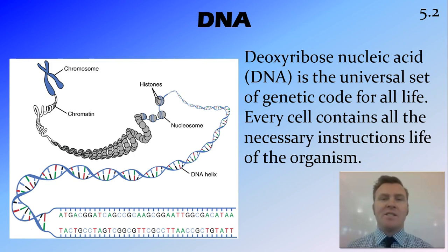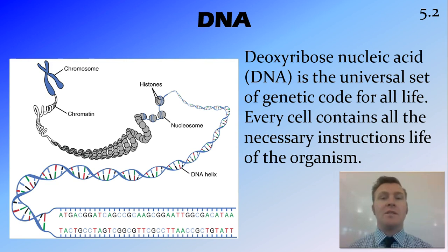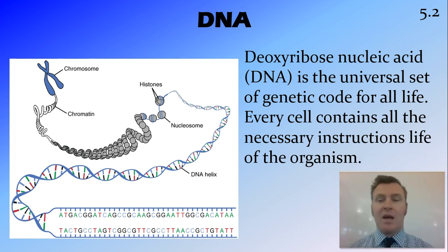Every cell — in multicellular organisms especially — contains all the genetic code for the organism. This means that every single cell in the body, whether it's a skin cell, a bone cell, a muscle cell, or a blood cell, all of these cells have the genetic code necessary to be any of the other cells. That's something really cool.